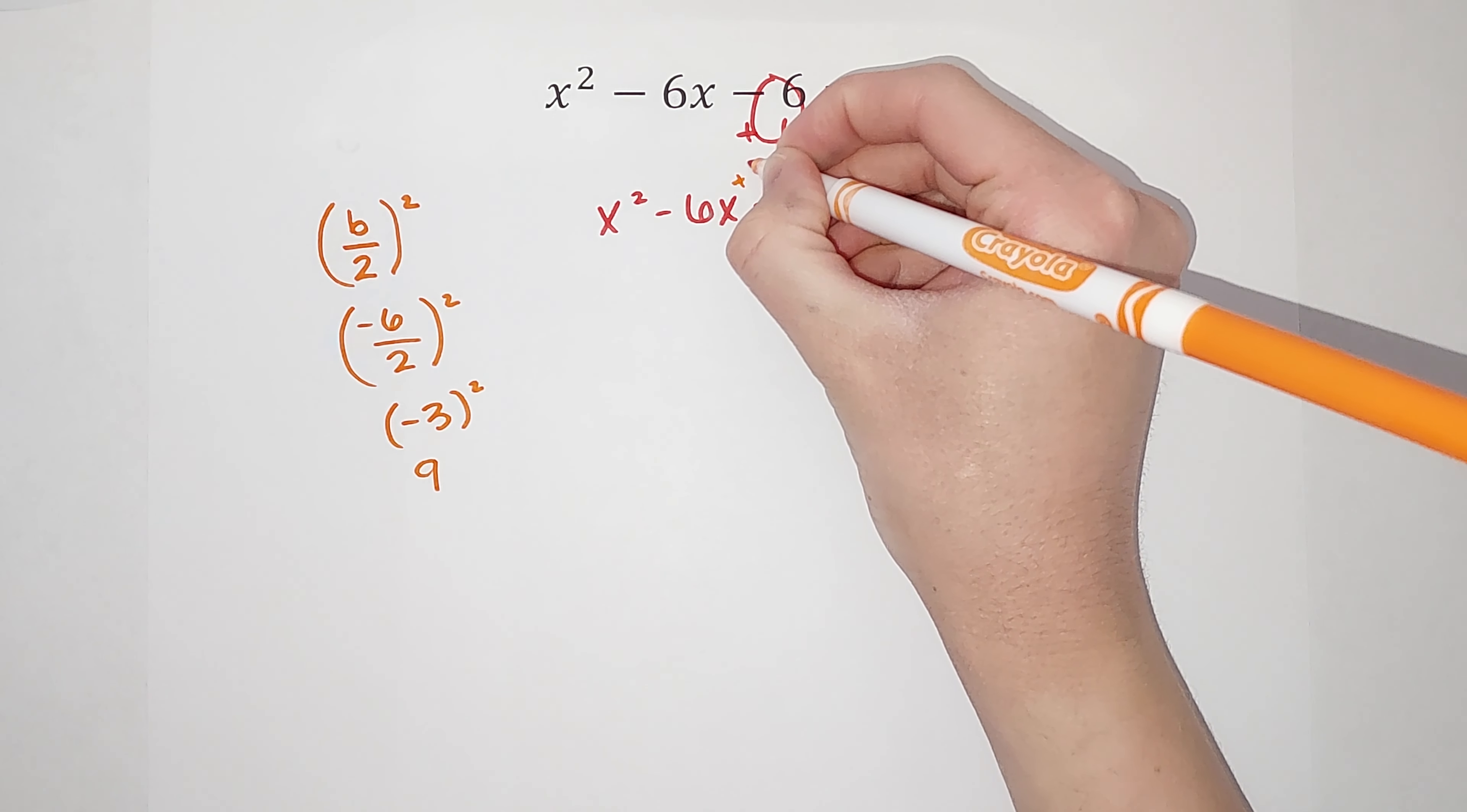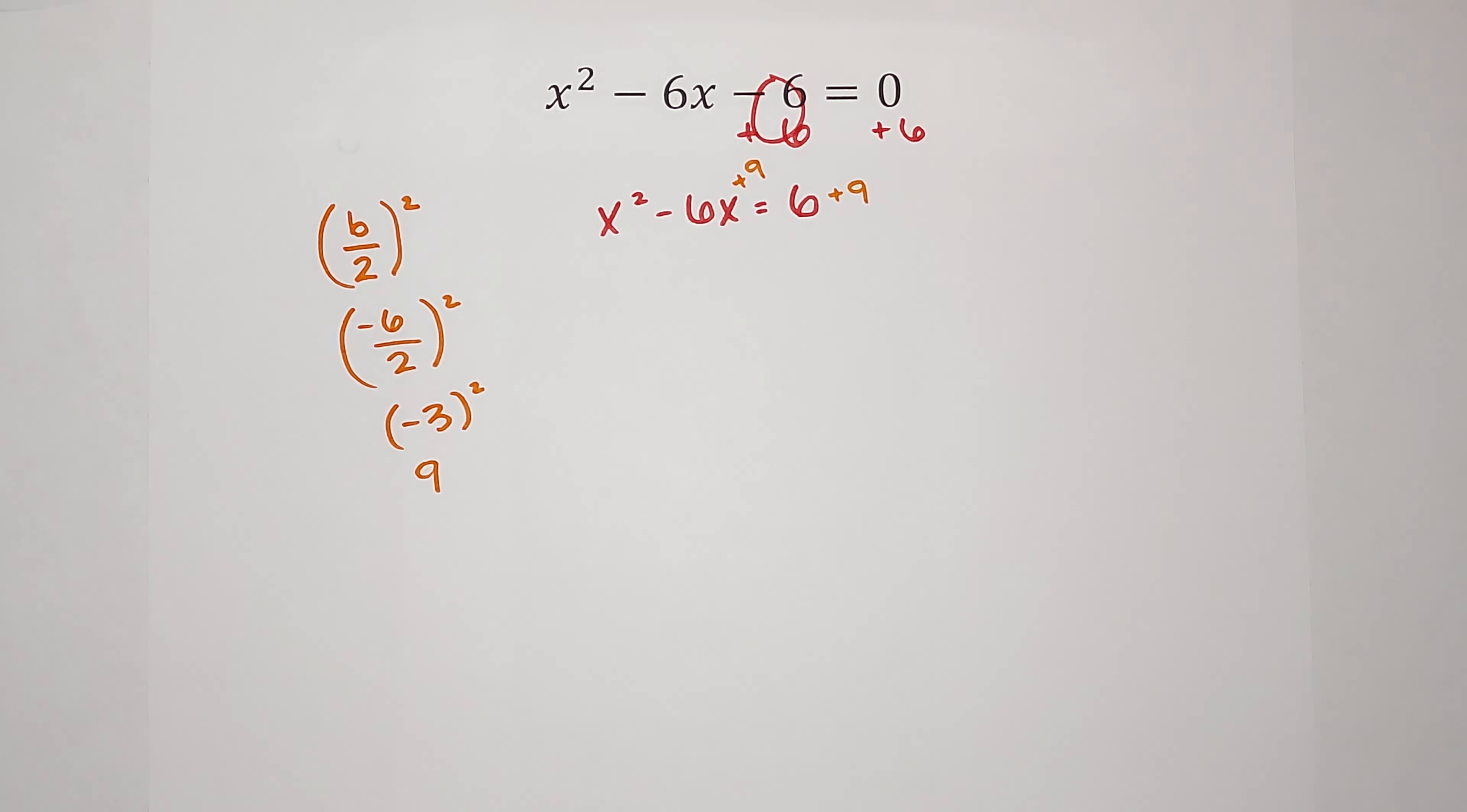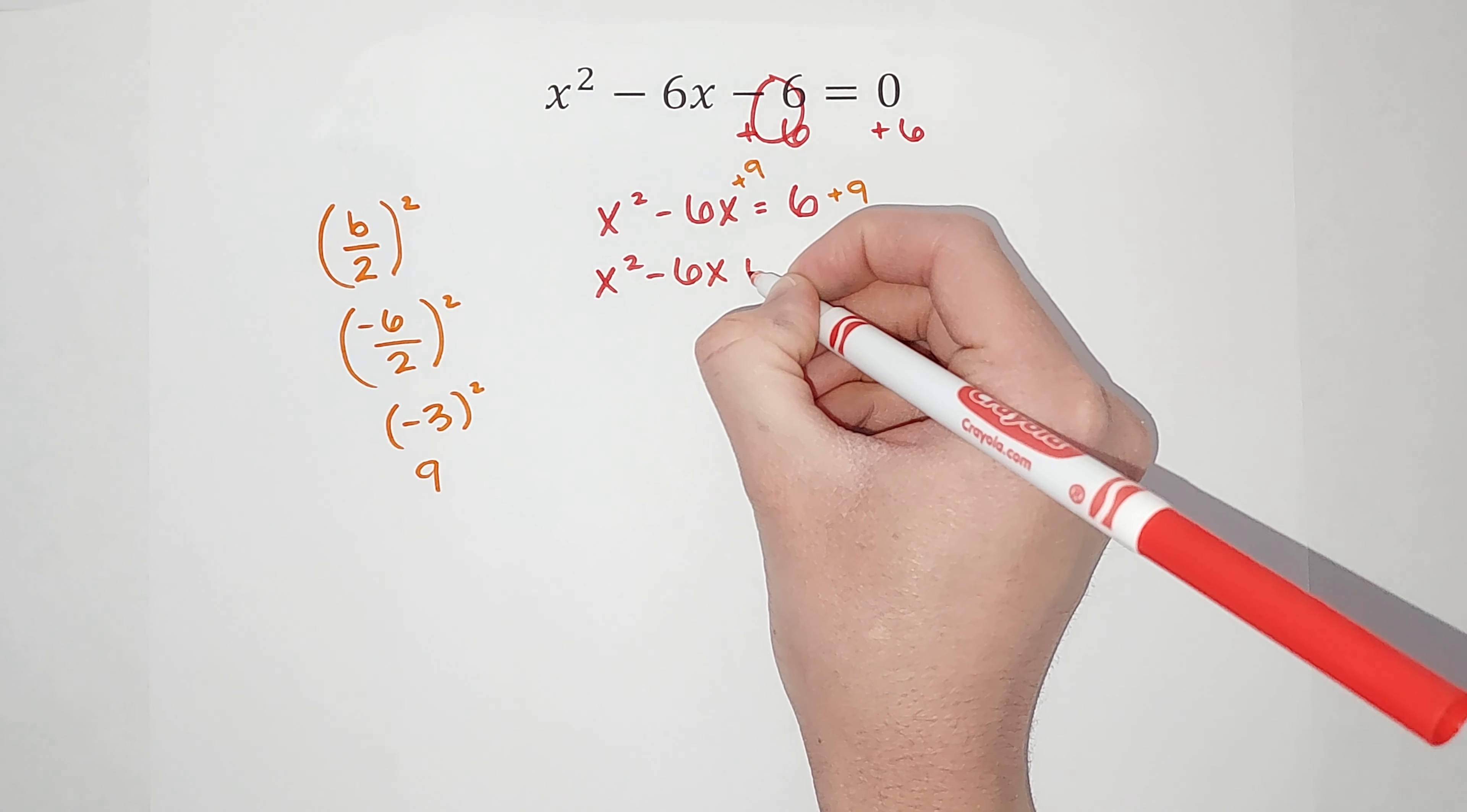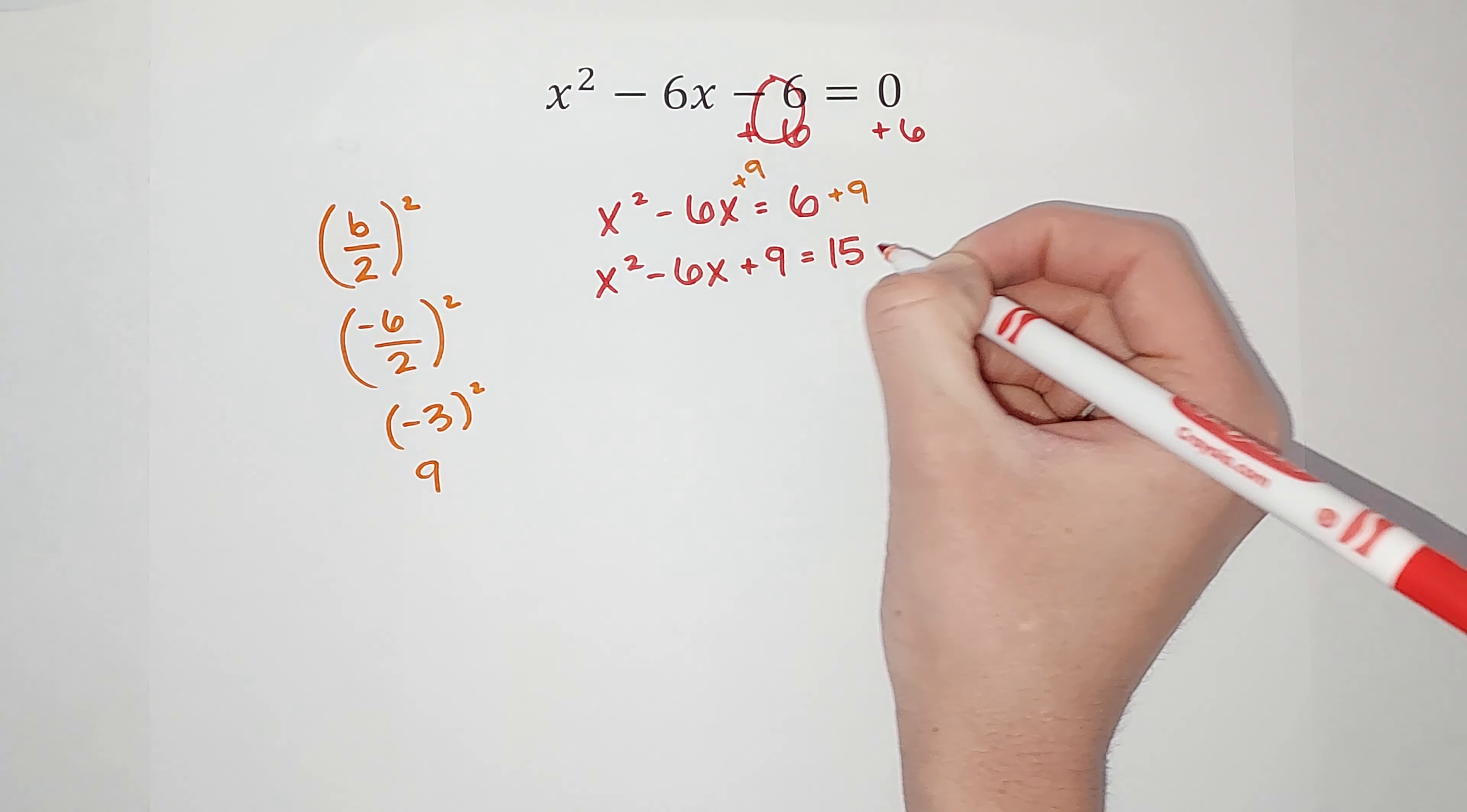So I am going to add 9 to both sides of my equation and see what happens. Why can I do this? Because as long as I do it to both sides, it's okay. I could add, subtract, multiply, divide, whatever I want as long as I do it to both sides. So in this case, I feel that adding 9 to both sides is going to help me solve this. I have x squared minus 6x plus 9 equals 15.